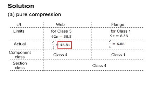This number is greater than class 3, therefore it is considered class 4. This number is less than class 1, therefore it is considered class 1. The component is considered class 4 for the web and class 1 for the flange. Therefore, the entire section is considered class 4.